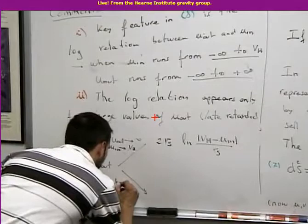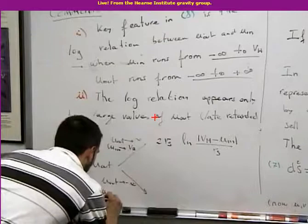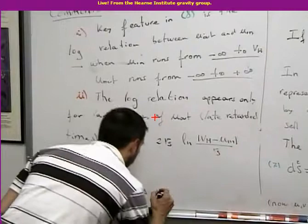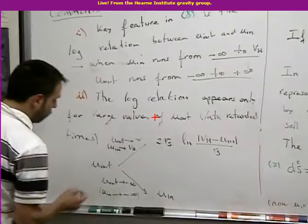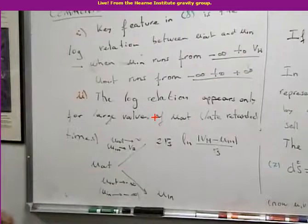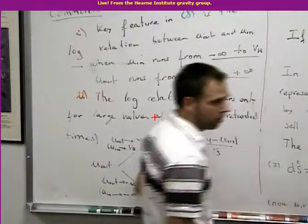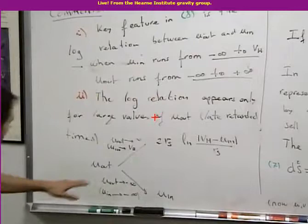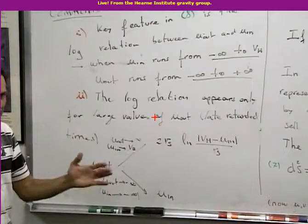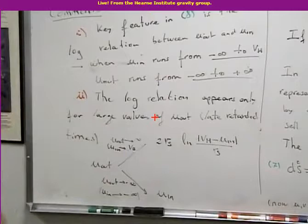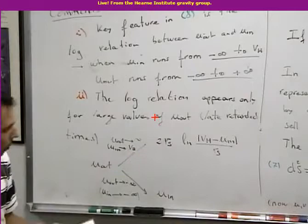So u_out and u_in have a linear relation at early times, and then the relation becomes logarithmic later on. Initially, u_in and u_out click at the same time, but then u_out starts clicking faster and faster, reaching infinity when u_in still has a finite value equal to v_H. That is important to derive Hawking radiation. This is why Hawking radiation only appears at late times, after the process of collapse - because we really need this logarithmic behavior.